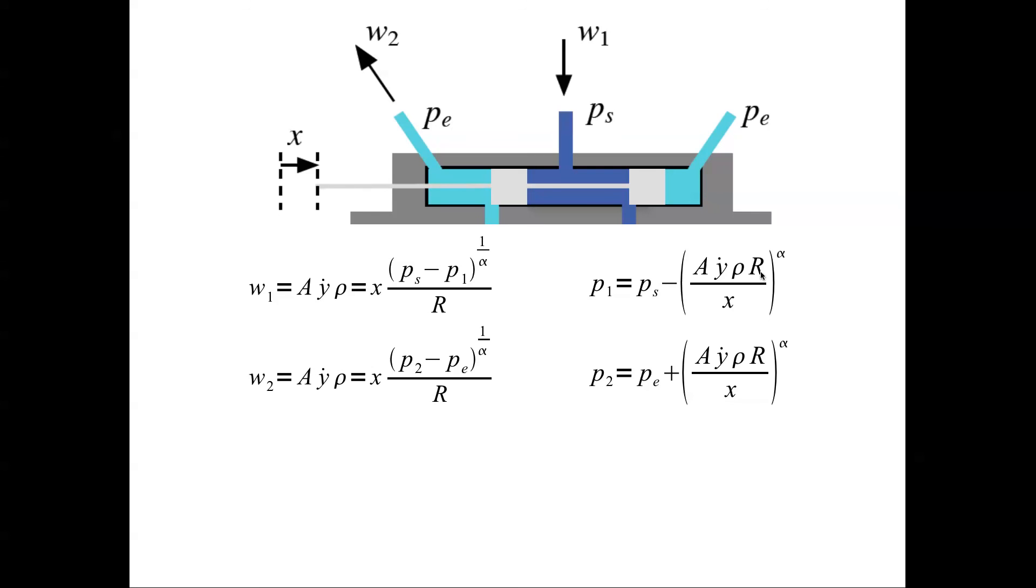You can write a similar equation for P2. And then if you subtract P1 minus P2 equal to Ps minus Pe minus 2 times rho Y dot rho R divided by X to the power of alpha. You can write Ps minus Pe as delta V. This is always constant. It is maintained constant.